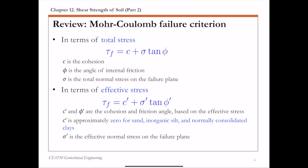A quick review of the Mohr-Coulomb failure criterion: it basically states that the shear stress at failure, which we call tau f — that's the shear strength of soil — is a function of the normal stress on the failure plane, which we call sigma. There are two shear strength parameters involved: cohesion c, and the angle of internal friction phi. The first expression is the Mohr-Coulomb failure criterion in terms of total stress, and the second expression is in terms of effective stress, where c prime and phi prime are the cohesion and friction angle based on effective stress. Phi prime is also called the drained friction angle.